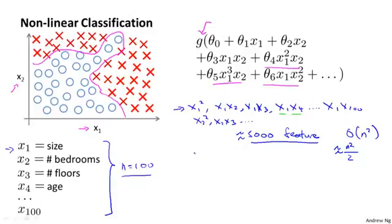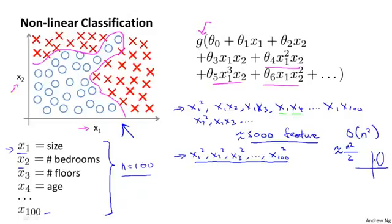One thing you could do is include only a subset of these. So if you include only the features x1 squared, x2 squared, x3 squared, up to maybe x100 squared, then the number of features is much smaller. Here you have only 100 such quadratic features. But this is not enough features and certainly won't let you fit a data set like that on the upper left. In fact, if you include only these quadratic features together with the original x1 and so on up to x100 features, then you can't actually fit very interesting hypotheses. So you can fit things like axis aligned ellipses like these, but you certainly cannot fit to more complex data like that shown here.